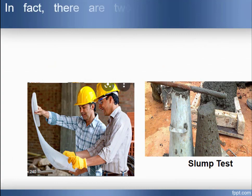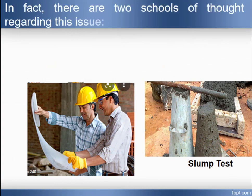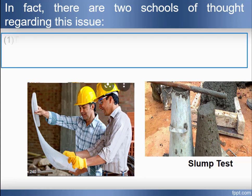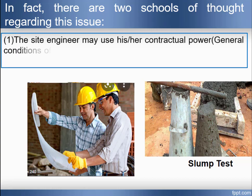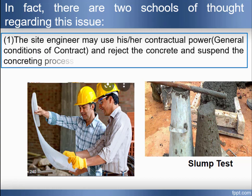In fact, there are two schools of thought regarding this issue. The first one: the site engineer must use his or her contractual power — which means invoking the general conditions of contract — and reject the concrete and suspend the concreting process.